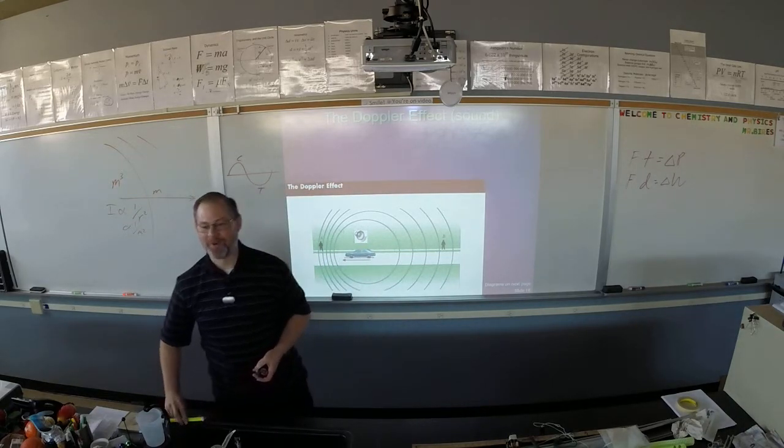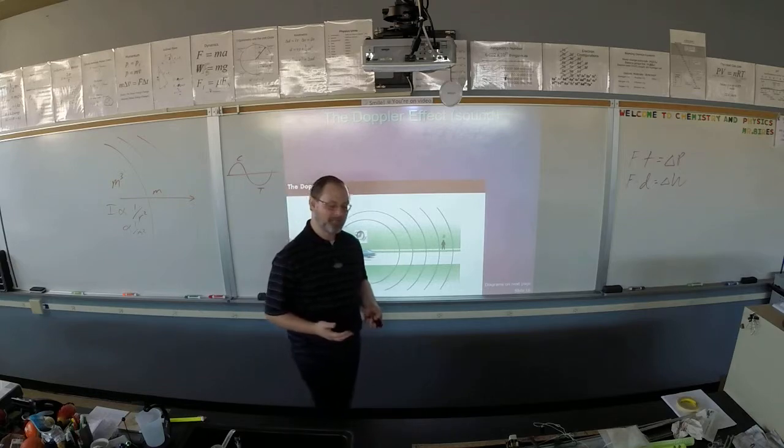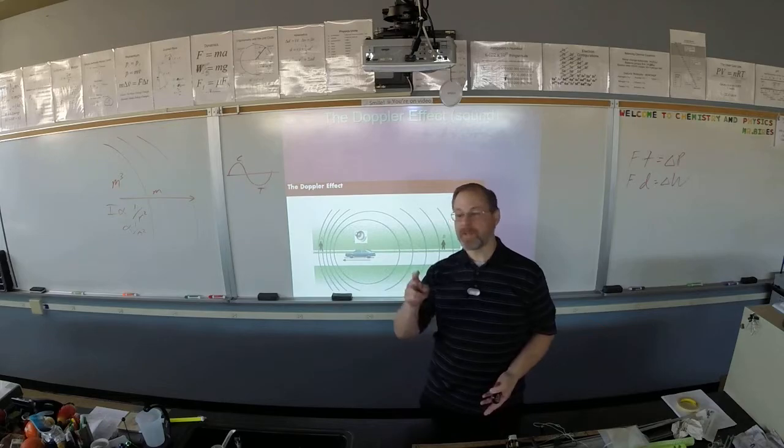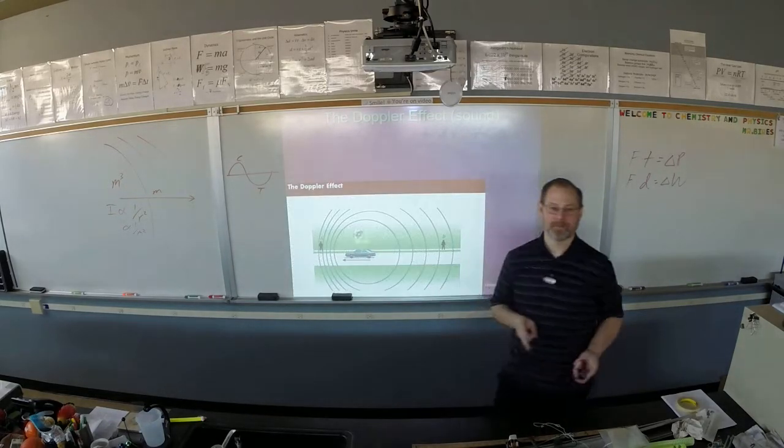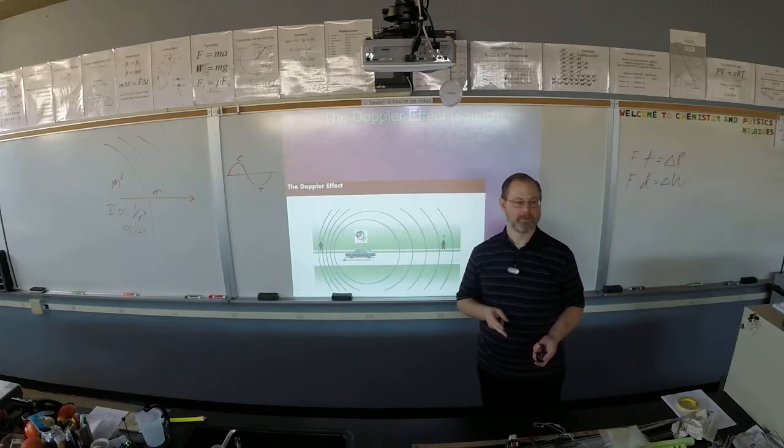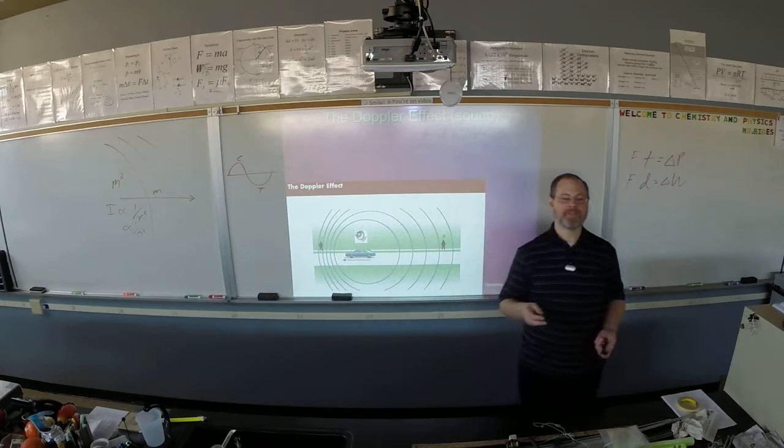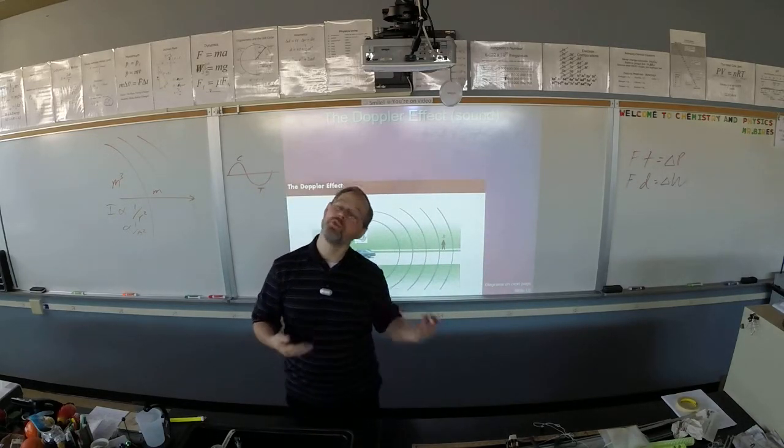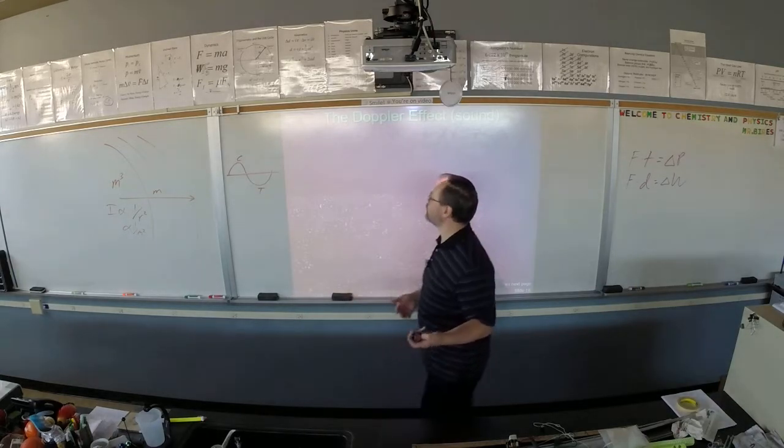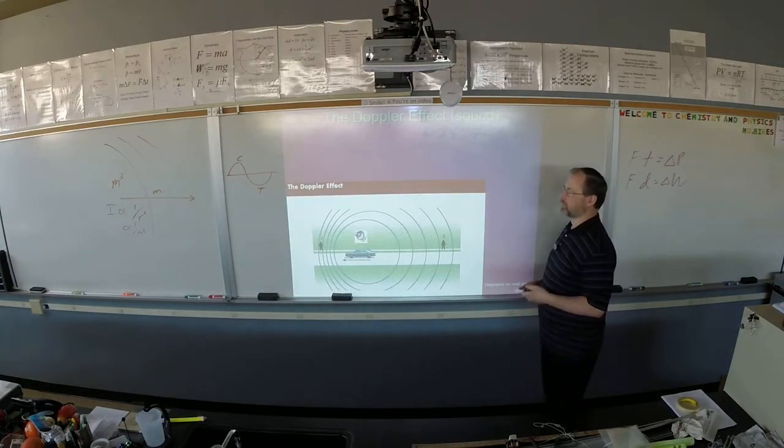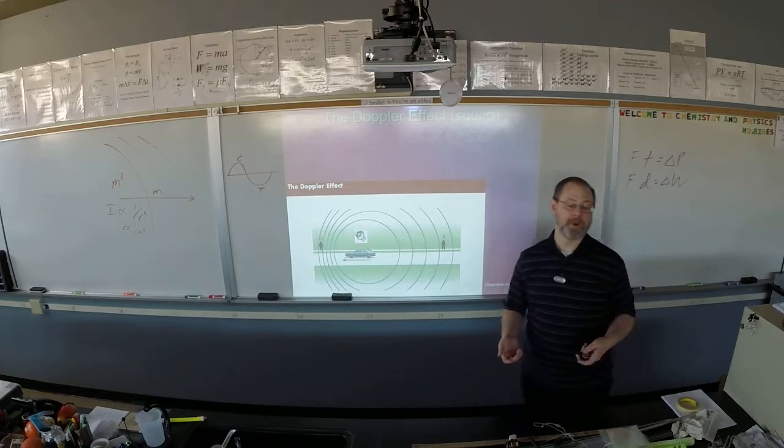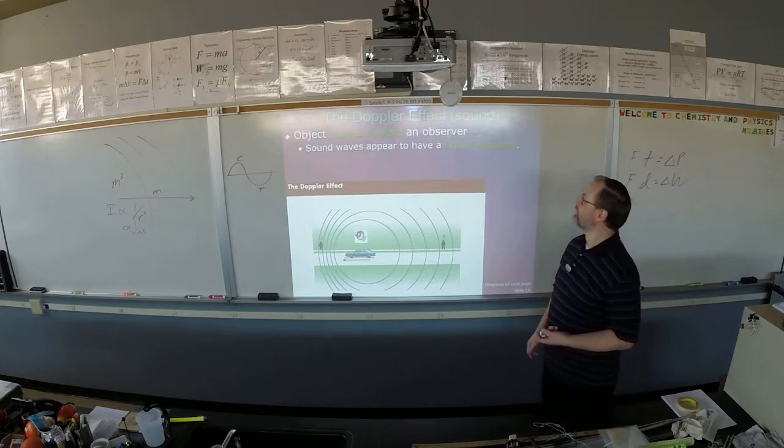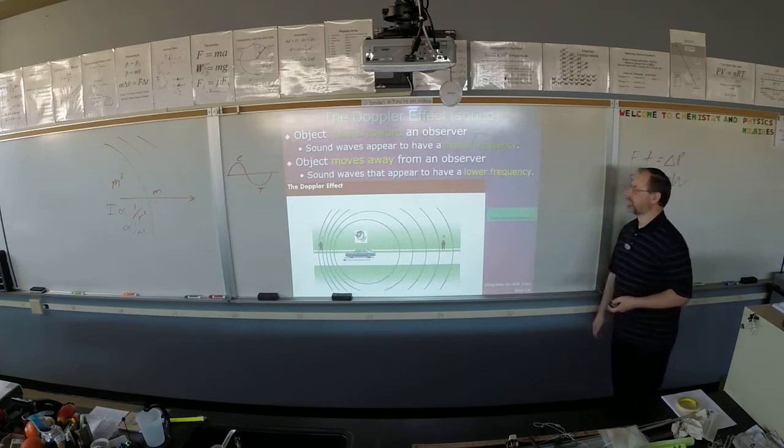You ask any toddler what sound a race car makes and they always give you two syllables. As the thing moves towards you, you get the 'ver.' As the thing moves away from you, you get the 'oom.' So as it moves towards you, you get the 'ver.' As it moves away from you, you get the 'oom.' And you get the ka-chow.